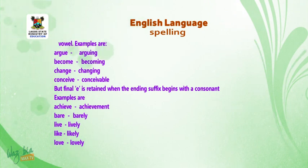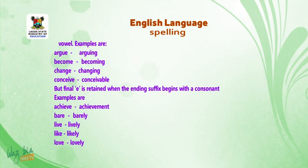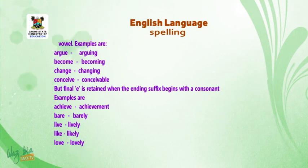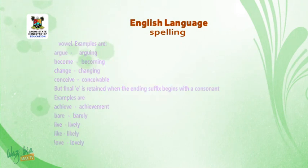Examples where final E is retained before a consonant suffix: achievement, bare — barely, life — lively, like — likely, love — lovely.